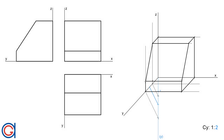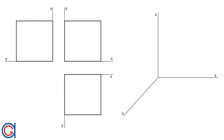Hello, today we are going to talk about oblique projection, specifically cavalier projection and cabinet projection. Oblique projection is a simple type of technical drawing of graphical projections used for producing two-dimensional images of three-dimensional objects. The objects are not in perspective and so do not correspond to any view of an object that can be obtained in practice, but the technique is somewhat convincing and useful.